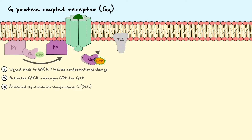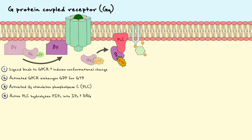The active αQ then stimulates phospholipase C, also known as PLC, which is an enzyme with the main role of hydrolyzing substrates. When active, the substrate that PLC hydrolyzes is phosphatidylinositol-4,5-bisphosphate, more simply known as PIP2.